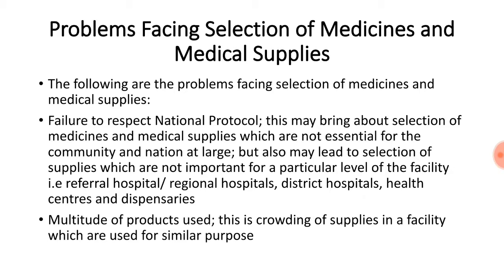Now let us look at the problems facing selection of medicines and medical supplies. The first problem is failure to respect national protocol. This may bring about selection of medicines and medical supplies which are not essential for the community and the nation at large. It may also lead to selection of supplies not important for a particular level of facility — whether referral hospitals, regional hospitals, district hospitals, health centers, or dispensaries.